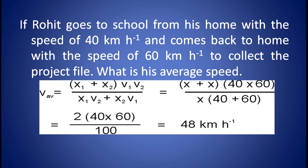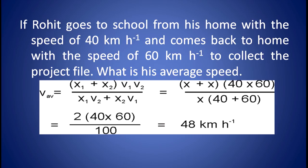Now, let us work out a numerical. If Rohit goes to school from his home with the speed of 40 km/h and comes back home with the speed of 60 km/h to collect the project file, what is his average speed? We are given v1 equals 40 km/h and v2 equals 60 km/h. We can use the third expression: v_avg equals (x1 plus x2) times v1·v2 divided by (x1·v2 plus x2·v1). Putting in all the values, the average speed comes out to be 48 km/h.